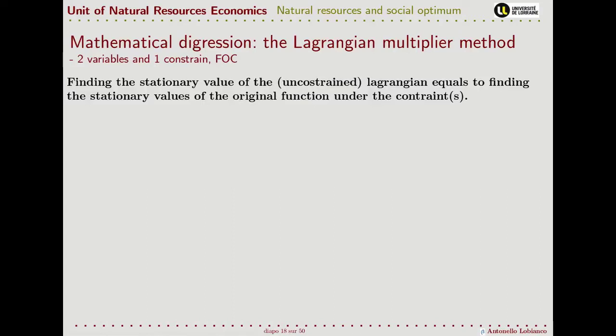What the Lagrange multiplier method tells us is that finding the stationary value of this new Lagrangian function — which is unconstrained, so we can use the normal methods we know to find the optimum — is equivalent to finding the stationary values of the original function under the constraints that we set.